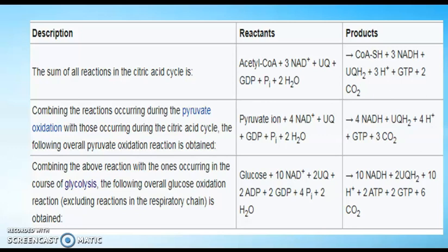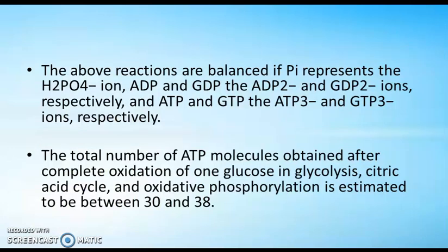Combining glycolysis with the above reactions, the overall glucose oxidation reaction is: glucose + 10 NAD⁺ + UQ + 2 ADP + 2 GDP → 10 NADH + 2 UQH2 + 10 H⁺ + 2 ATP + 2 GTP + 6 CO₂. These reactions are balanced if inorganic phosphate represents H₂PO₄⁻ ion, ADP²⁻, GDP²⁻, ATP³⁻, and GTP³⁻ ions respectively.